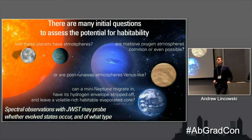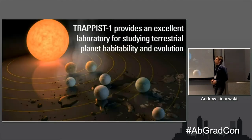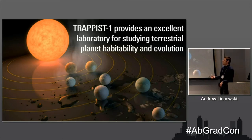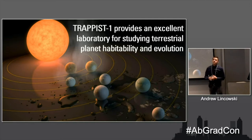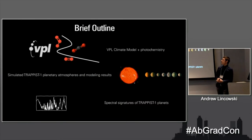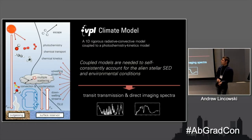Spectral observations by James Webb will help us distinguish among these scenarios. We've already heard a little about TRAPPIST-1 — three planets inside the inner edge of the habitable zone, three within the conservative habitable zone, and at least one planet beyond the outer edge. This gives a great single system to examine planetary evolution across seven different targets. In the first part of my talk I'll cover the climate model, the chemistry model, modeling results for atmosphere structures and chemistry, and then the spectral signatures.